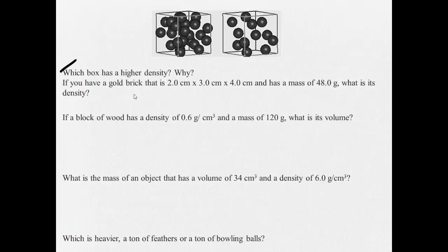Here, if you have a gold brick that is 2 centimeters by 3 centimeters by 4 centimeters, and has a mass of 48 grams, what is density? So D equals M over V. D equals M equals V equals. Well, density. What is the density? That's what I'm trying to find. Mass is 48 grams. 48.0 grams.